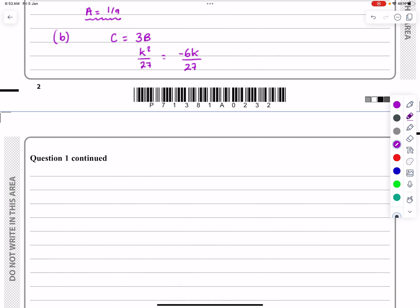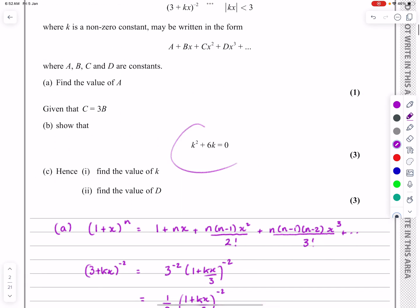So I'm going to get k squared equals minus six k, which means that k squared plus six k equals zero. And that's actually what they were asking us to show there.